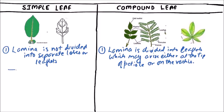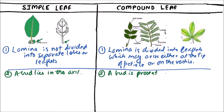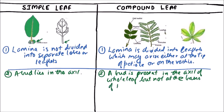A bud lies in the axil of the whole leaf — so a bud may be present in the axil of the whole leaf — but not at the base of the leaflets.